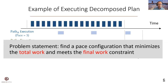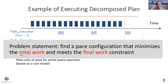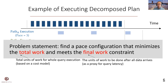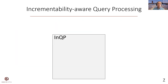Therefore, the problem here is how to find a pace configuration that minimizes the total work amid the final work constraint. The total work represents the total units of work for the whole query execution, and the final work represents the units of work to be done after all data arrives. It is a proxy for query latency. To solve this problem, we propose incrementability-aware query processing, or NQP.